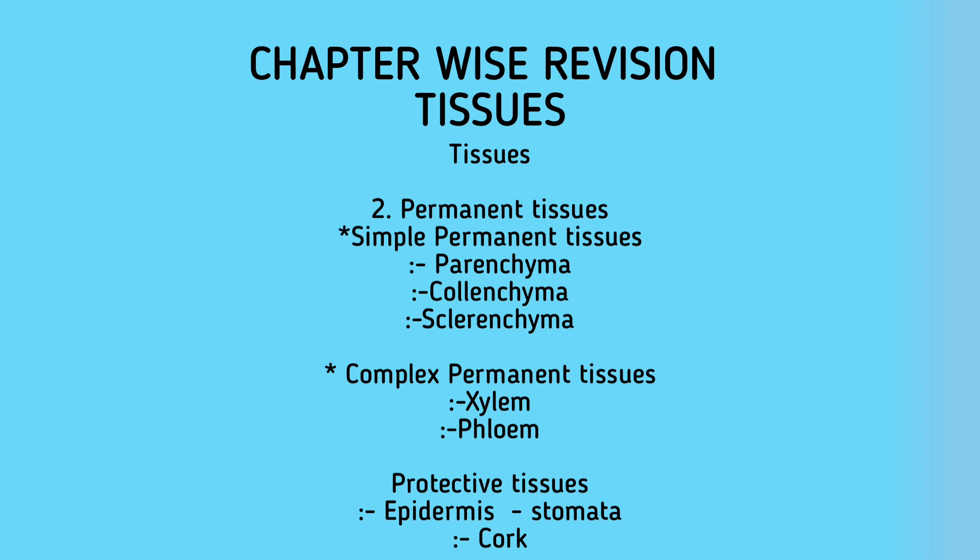The second type of plant tissue is permanent tissues. When meristematic cells lose their ability to divide and differentiate to form specialized tissues, they are called permanent tissues. These are classified into simple permanent tissues and complex permanent tissues. Simple permanent tissues are made up of only one type of cell, whereas complex permanent tissues are made up of more than one type of cell.